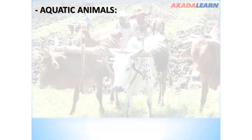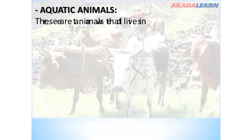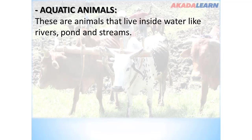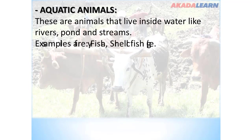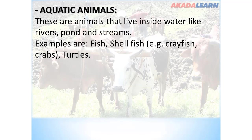Aquatic animals are animals that live inside water, such as rivers, ponds, and streams. Examples are fish, shellfish (e.g. crayfish), crabs, turtles, and even crocodiles.